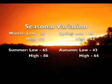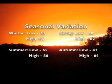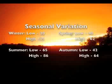However, seasonal variation is found in this biome, with a winter low of 20 degrees Fahrenheit and a high of 35 degrees Fahrenheit, a spring low of 40 degrees Fahrenheit and high of 62 degrees Fahrenheit, a spring low of 65 degrees Fahrenheit and a high of 86 degrees Fahrenheit, and an autumn low of 42 and high of 64.